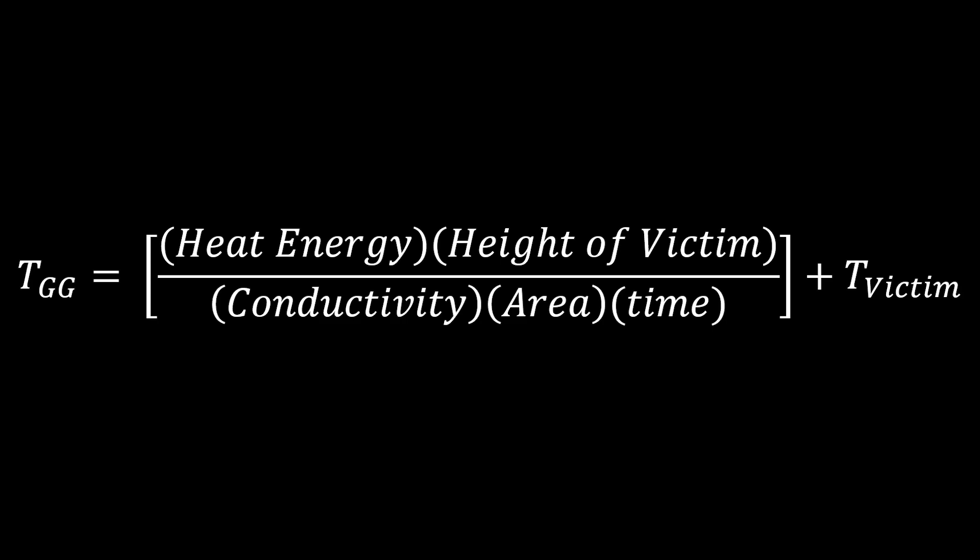Now, what do all these variables mean? Well, the heat energy is not the same thing as temperature. In our case, it's the energy required to completely incinerate a human. The height of the victim is pretty self-explanatory. The area here is the cross-sectional area of a human. I'll get into this more in a bit. The thermal conductivity measures how easily heat is transported through a material, and it's different for different types of materials. Again, I'll go into this in more depth later.